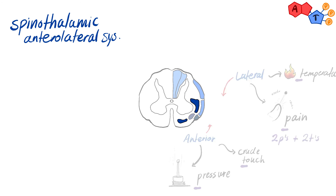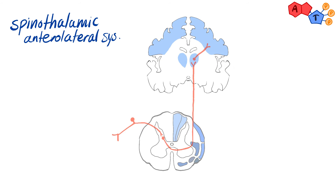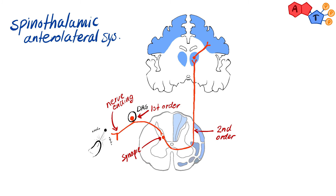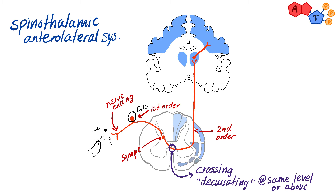Now discussing the spinothalamic tract pathway — this applies to both anterior and lateral spinothalamic tracts. First order neurons have cell bodies located in the dorsal root ganglia, receiving information from peripheral receptors and nerve endings for pain, temperature, crude touch, and pressure. First order neurons synapse with second order neurons in the dorsal horn at the same level they enter. The axons of the second order neurons then cross or decussate to the contralateral side of the spinal cord at the same level or a level above it, and ascend from there.